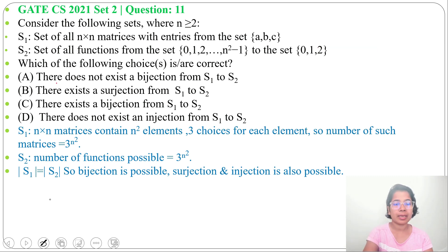Now option A: there does not exist a bijection from S₁ to S₂. It is false. There exists, there can be a bijection from S₁ to S₂.